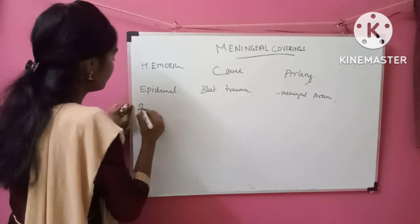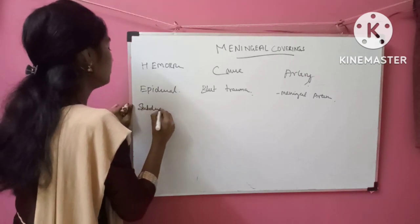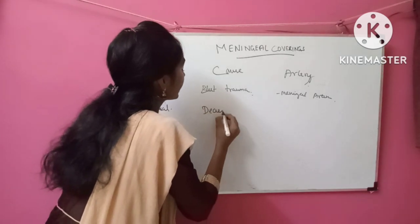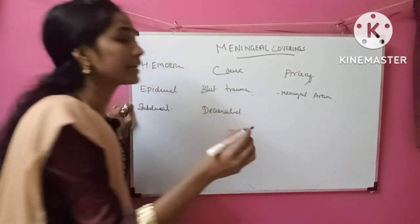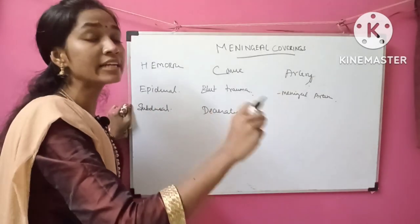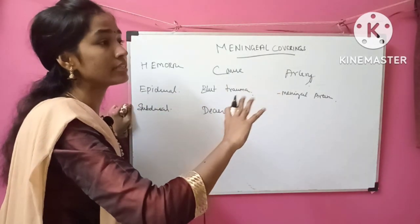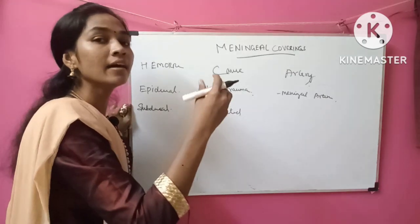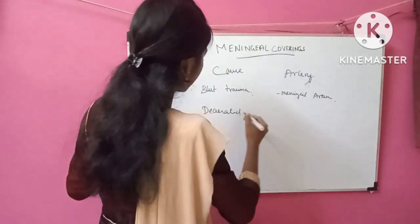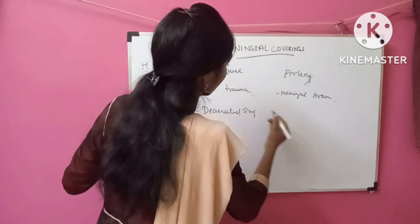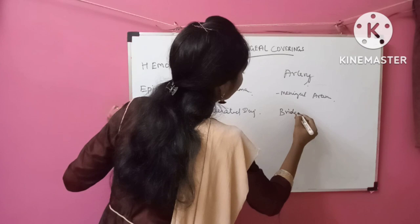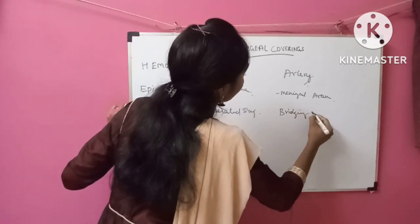Second, subdural hemorrhage — it is caused by decelerated injury. Decelerated injury means when a body is moving fast and suddenly hits a surface and the bridging vein ruptures. So subdural hemorrhage is caused by rupture of the bridging vein.